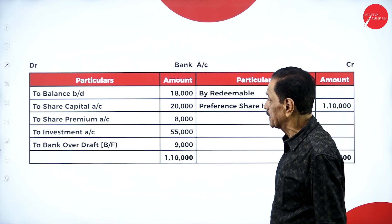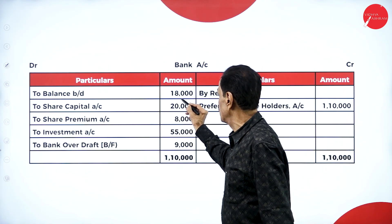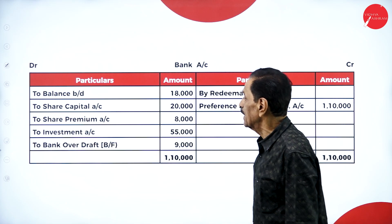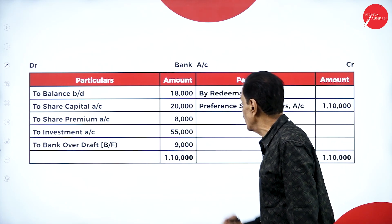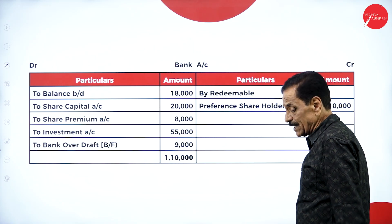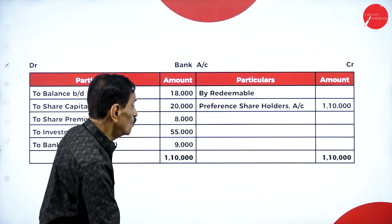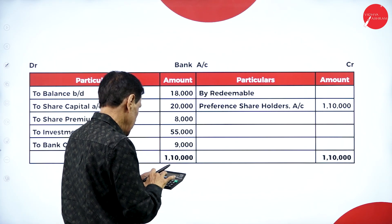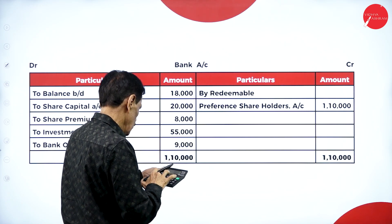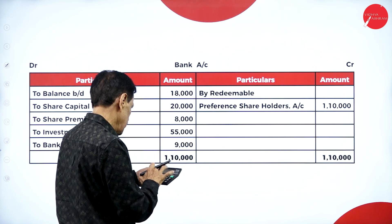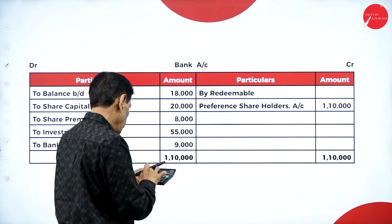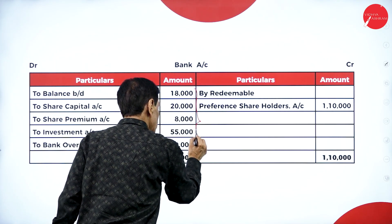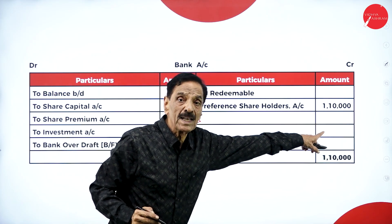Now to arrange the overdraft: the problem says you have a balance in cash/bank of eighteen thousand; issue of share capital twenty thousand; issue of share premium eight thousand; by selling the investment you got fifty-five thousand. If you add all these figures — eighteen thousand plus twenty thousand plus eight thousand plus fifty-five thousand — the total available is one lakh one thousand. But how much you have to pay is one lakh ten thousand.